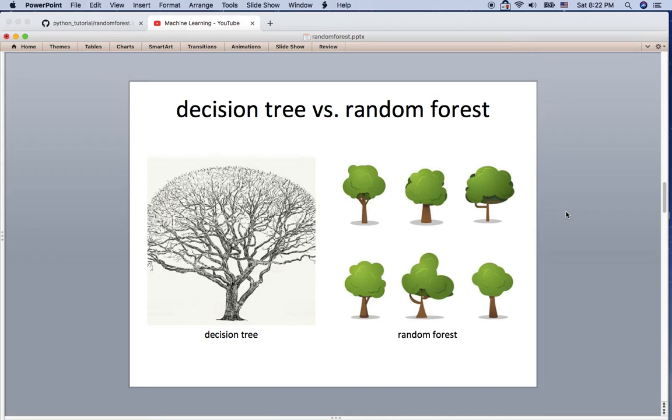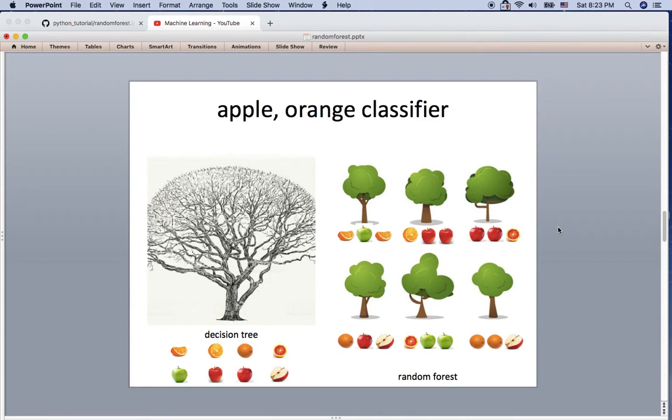So this is the easy comparison of the decision tree and the random forest. Decision tree is one giant big tree. Random forest has multiple small trees in different shapes like this. And I'm going to use an apple and orange classifier here.